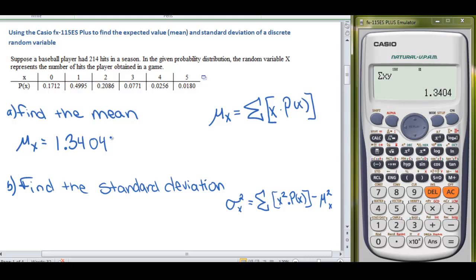Now let's find our standard deviation. The good news is we've already done the hard part of entering all the data. For the standard deviation, we need to remember that our variance, sigma squared, is the sum of x squared times p of x. So the 0 through 5 squared times the probability, and then we add all of those up. That would be 0 squared times 0.1712 plus 1 squared times 0.4995 plus 2 squared times 0.2086, so on and so forth. We're going to do all that and then subtract mu squared.